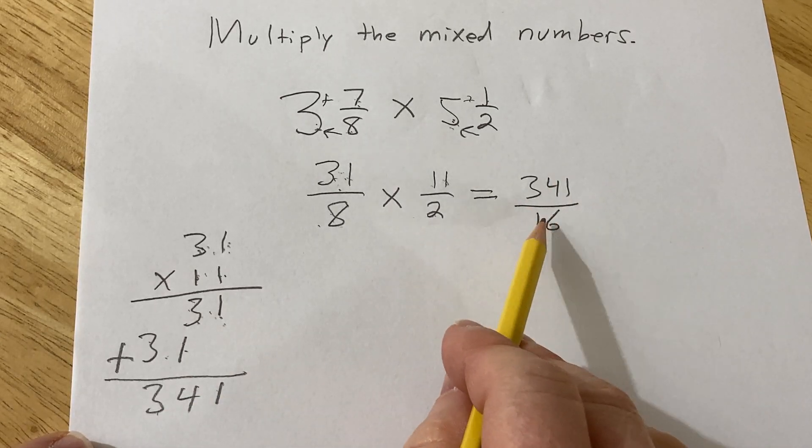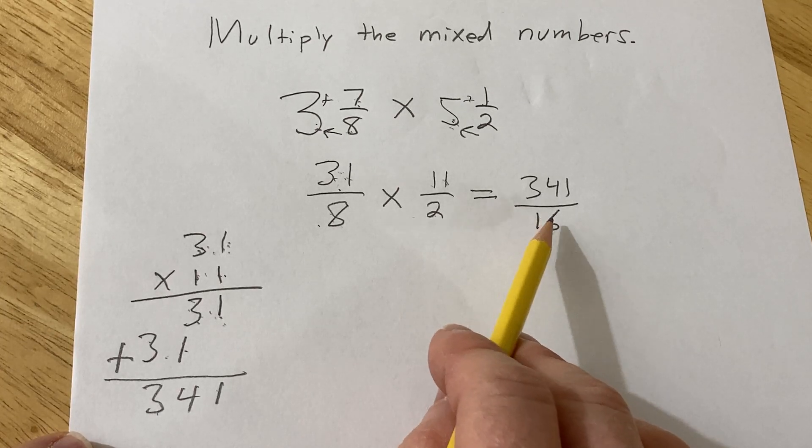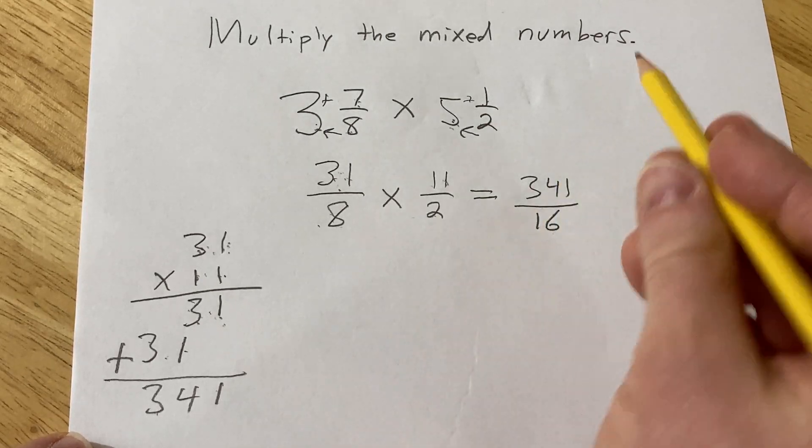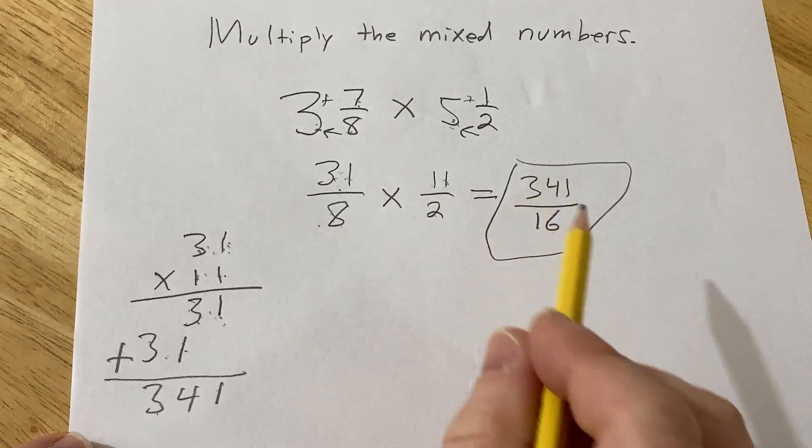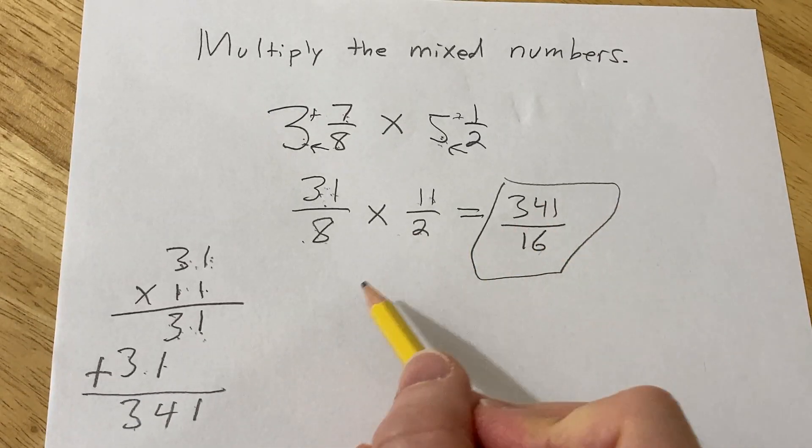You can also write this as a mixed number if you like. To figure out how to write it as a mixed number, you have to ask yourself how many times 16 goes into 341. You could certainly leave your answer like this though. So to figure that out, we can think about it like this.